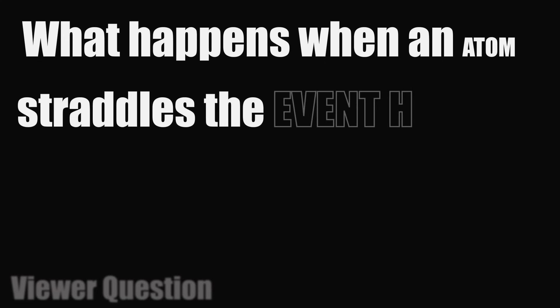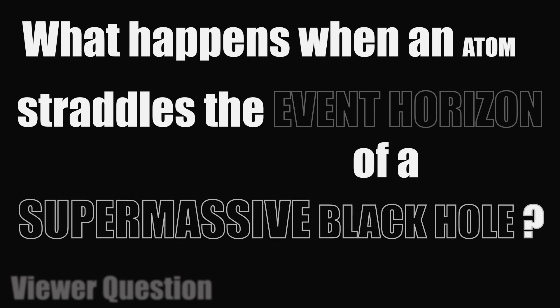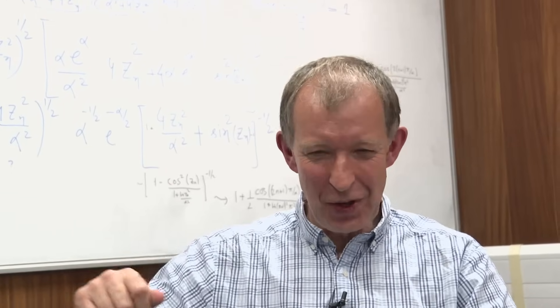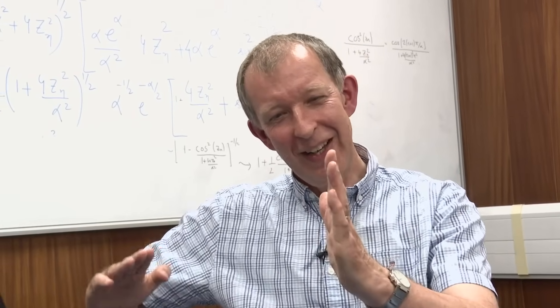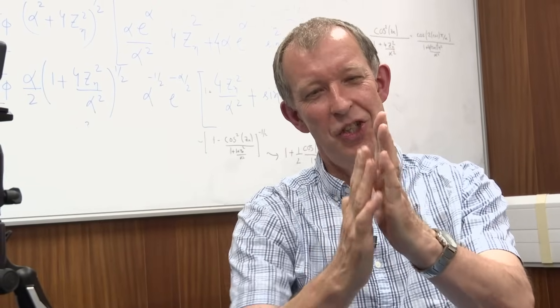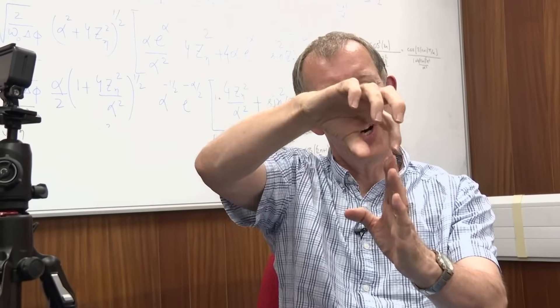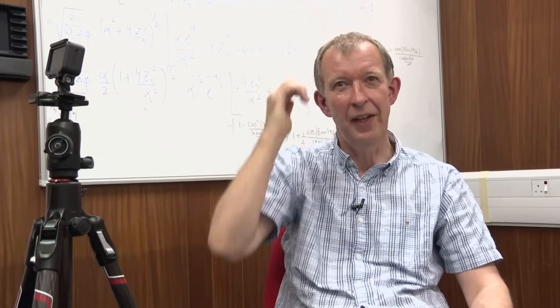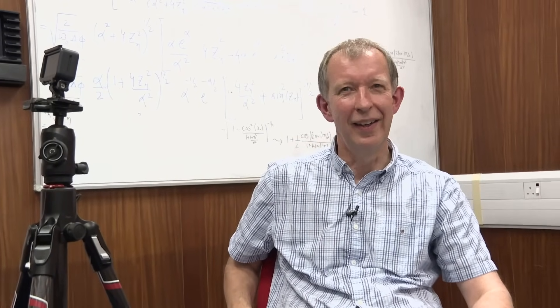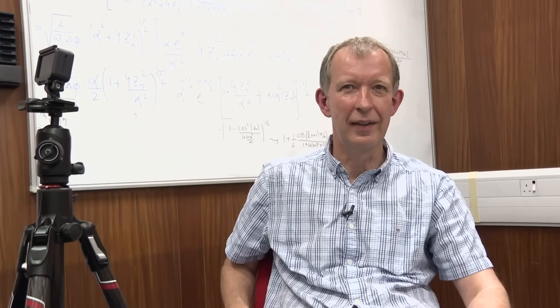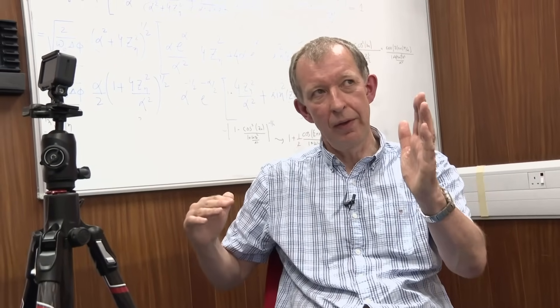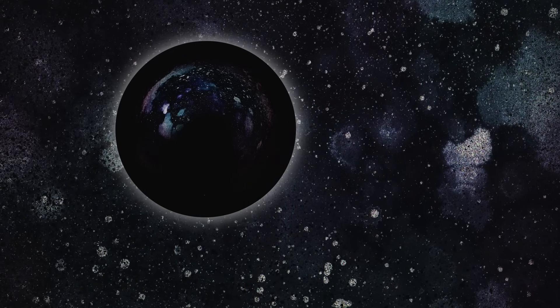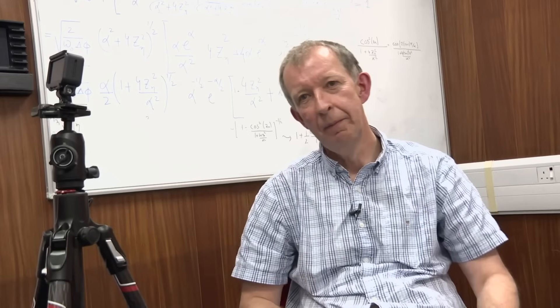What happens when an atom straddles the event horizon of a supermassive black hole? My guess is it falls in, unless you've given it a kick which allows it to go past it. But I think if it's straddling it, then the gravitational pull of the event horizon is just going to force it to come in. I guess where that question is coming from is we all know that you can't pass back over an event horizon. But if the atom's half in and half out, it's going to go in.